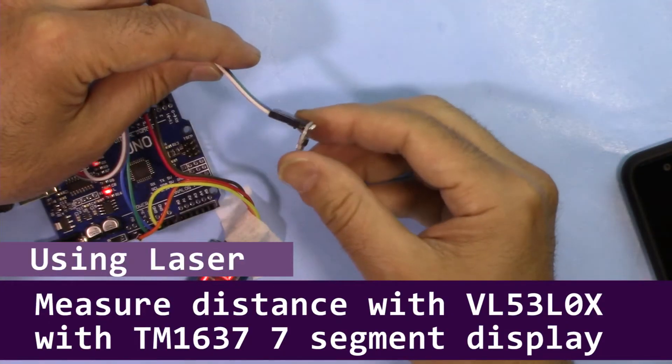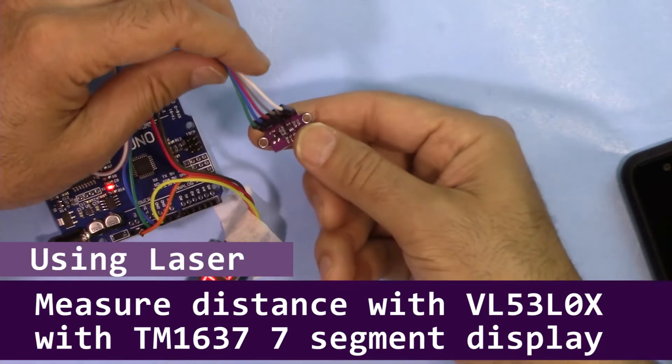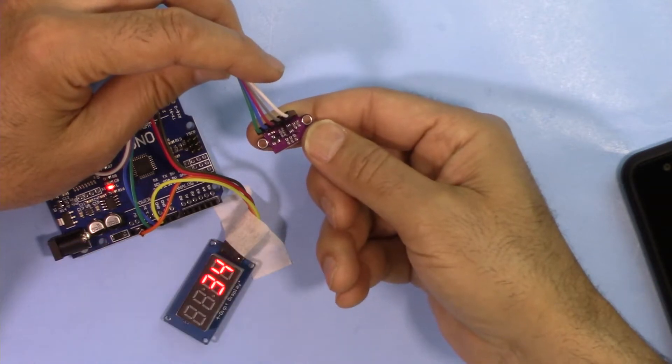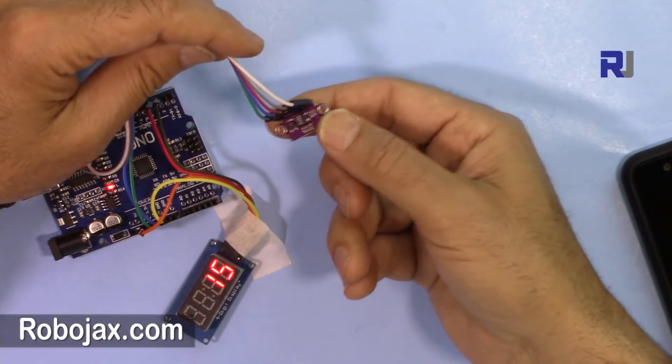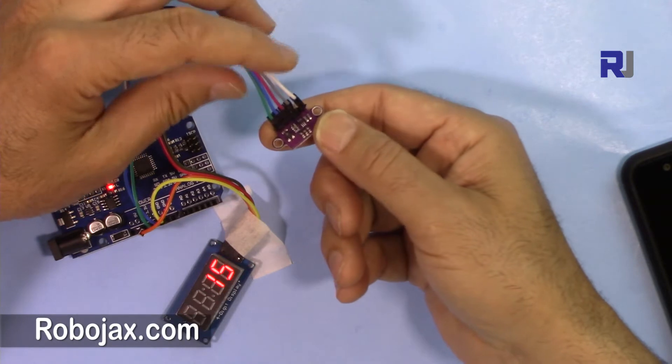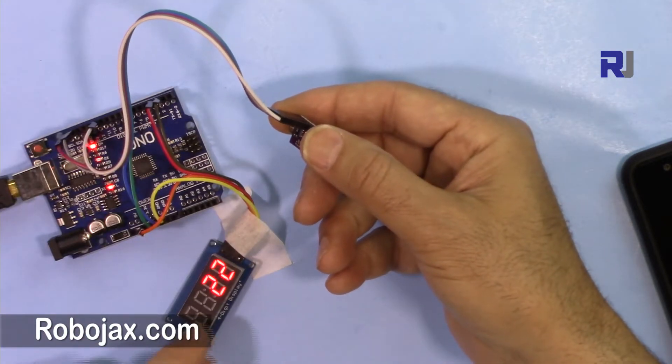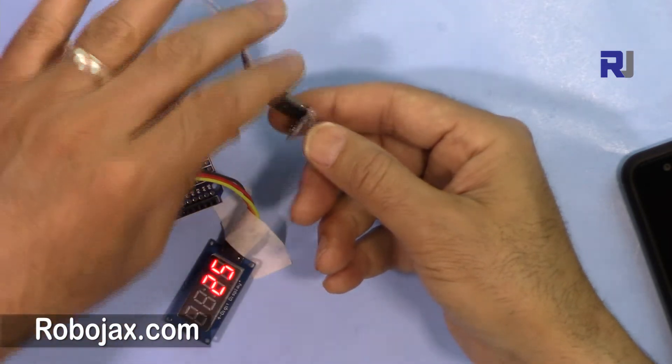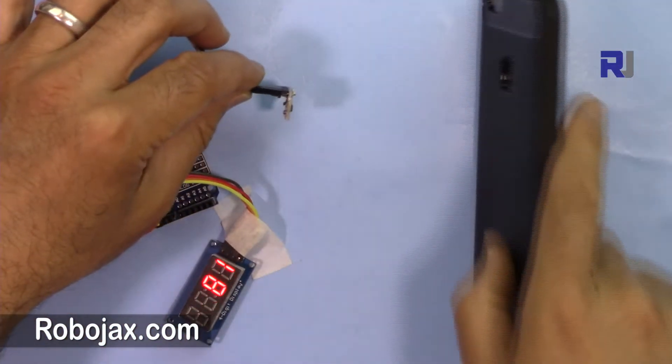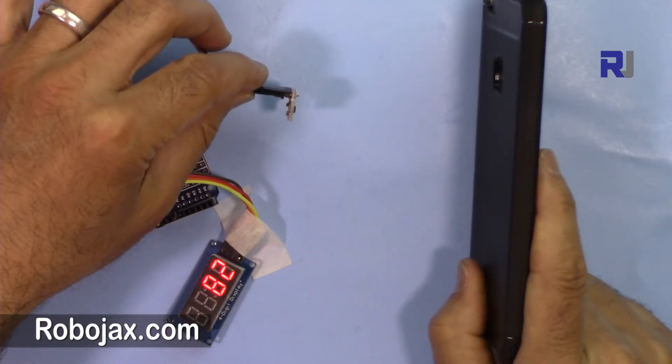Hi, welcome to a video tutorial from Robojax. In this video we're going to see how we can use this VL53L0X 6-pin laser meter with this TM1637 7-segment display. As you can see here, I have the distance about 8 centimeters or 80 millimeters.